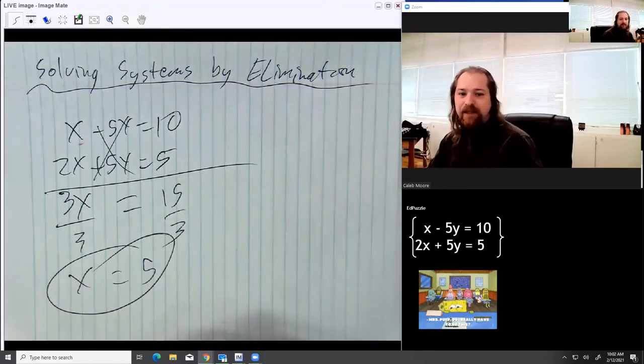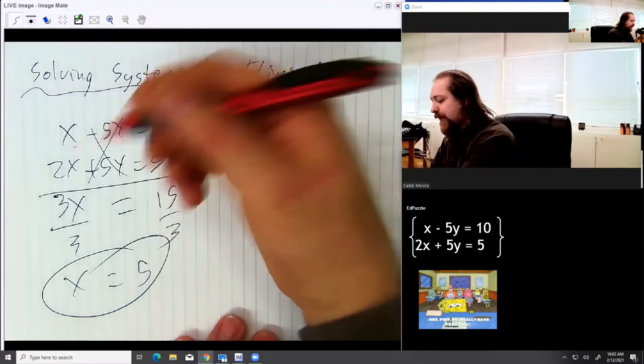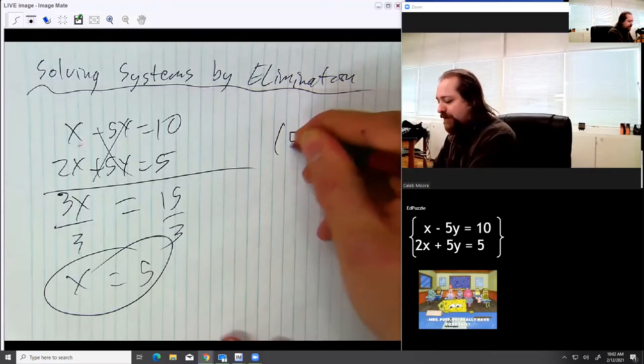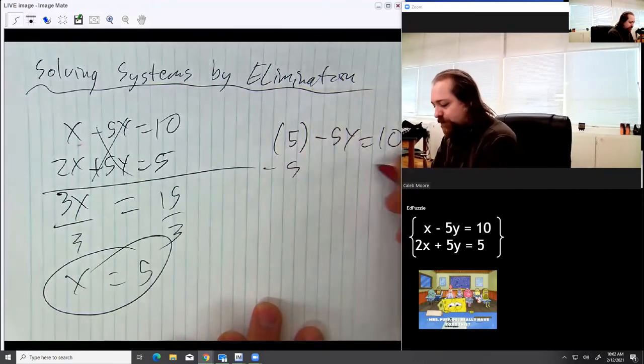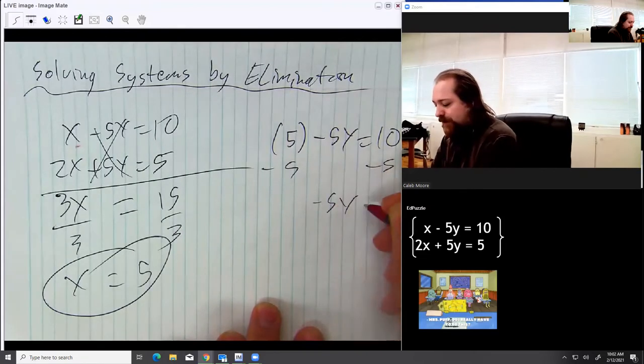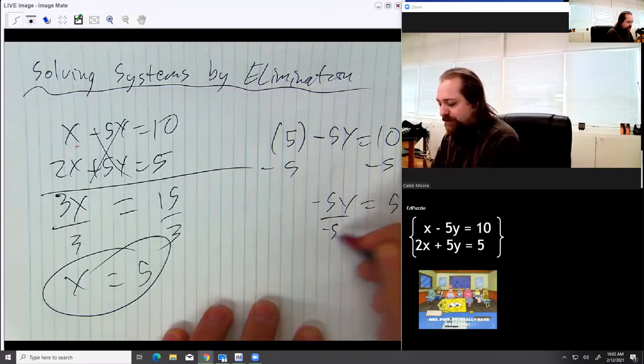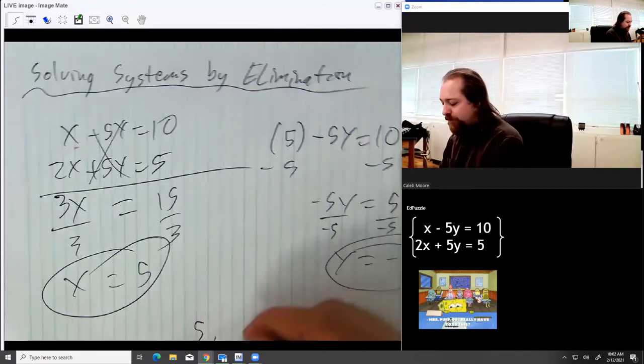That's one half of the answer. Second half is going to be found by plugging the x back into one of these equations. Let's go with the top one. It's going to give me 5 minus 5y equals 10. Subtract 5 from both sides. Negative 5y equals a positive 5. Dividing by negative 5, y is going to give me a negative 1. Final answer of 5, negative 1.